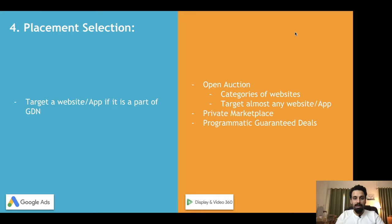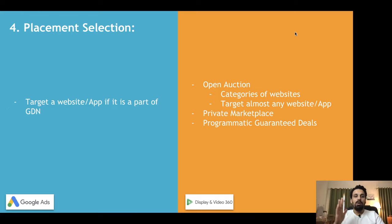There are three different types of inventory buys in DV360. The first is open auction, which is similar to Google Ads but with much wider reach. In addition to selecting a specific list of websites and apps, you can select categories of websites — for example, you can specify that your ad should be shown on all websites related to sports, news, entertainment, or any category of your choice.